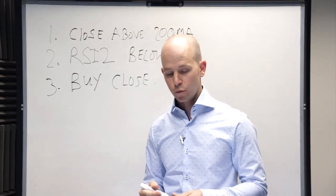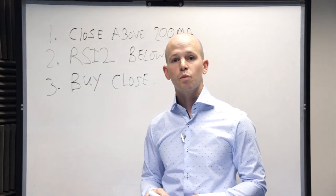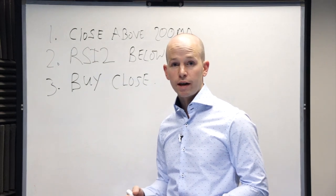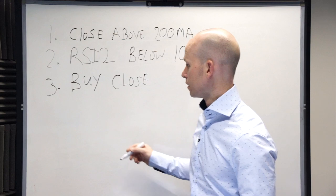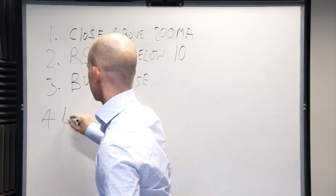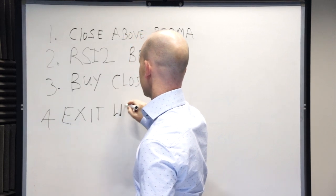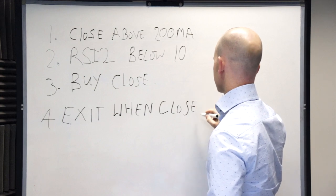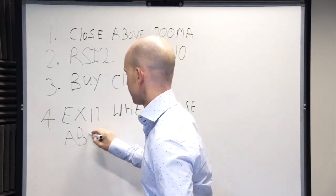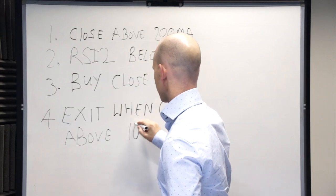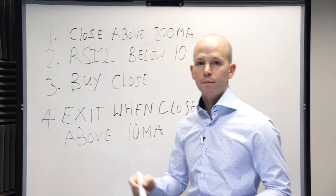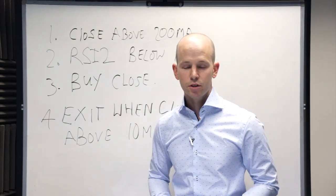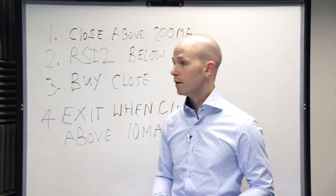And for our exit rules, we just got one rule. All we want to do is when the closing price is above the 10 period moving average, then we want to exit the trade. So exit when close above the 10 period moving average. I know people have asked, these are simple moving averages. It doesn't make too much difference whether they're simple or exponential. So now we know the rules.